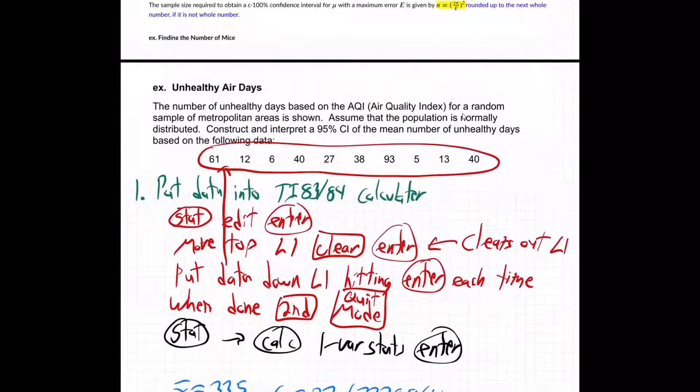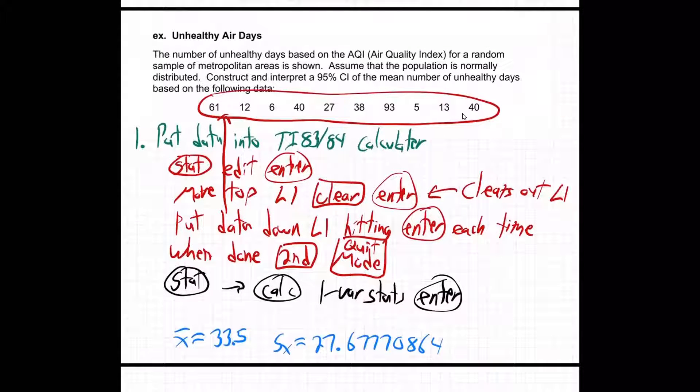Okay, so here we are. We're looking at this example, and let me just run over it again real quick for clarity. We're trying to figure out the number of unhealthy days for a bunch of metropolitan areas, find a 95% confidence interval. The first step is to take these numbers and put them into our calculator.